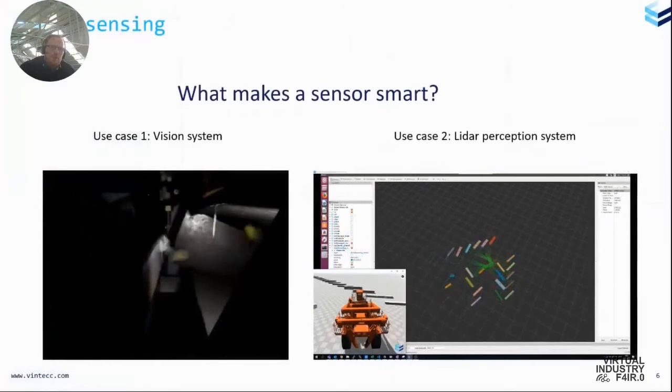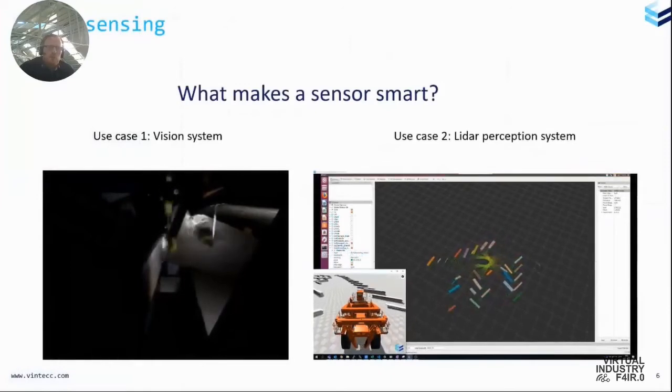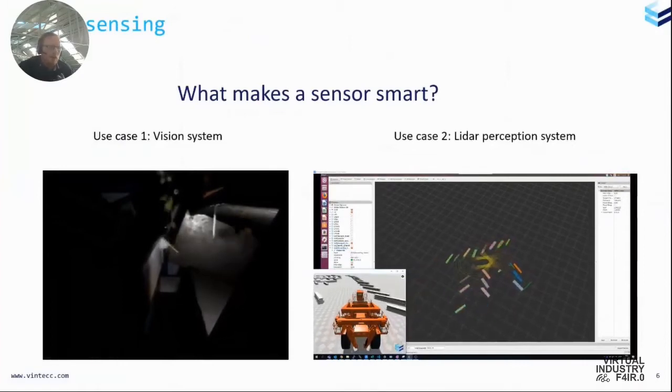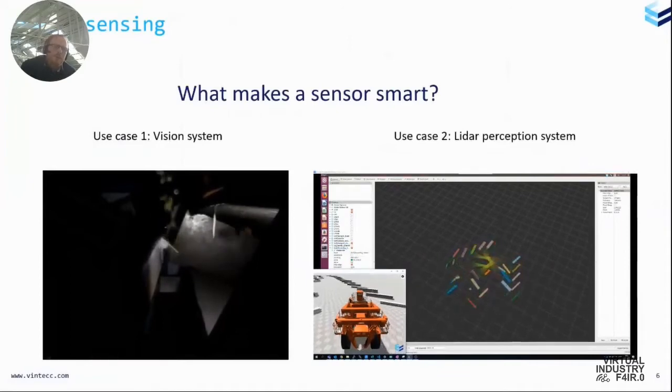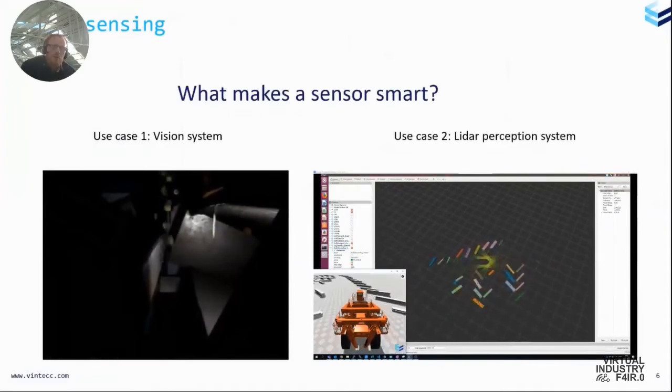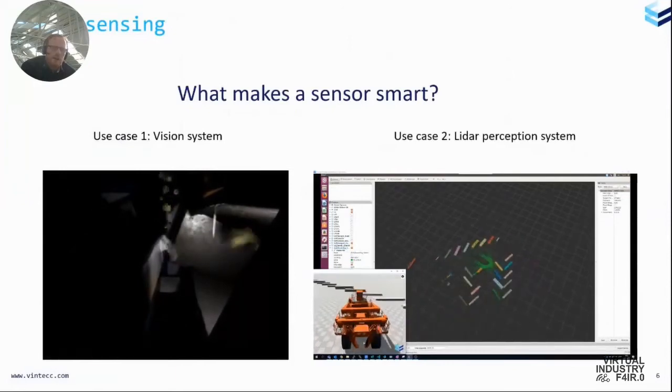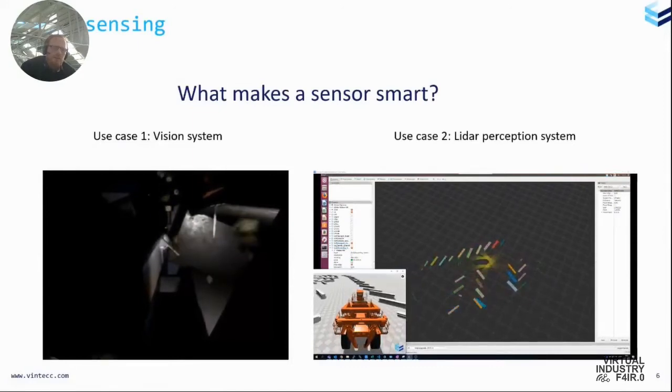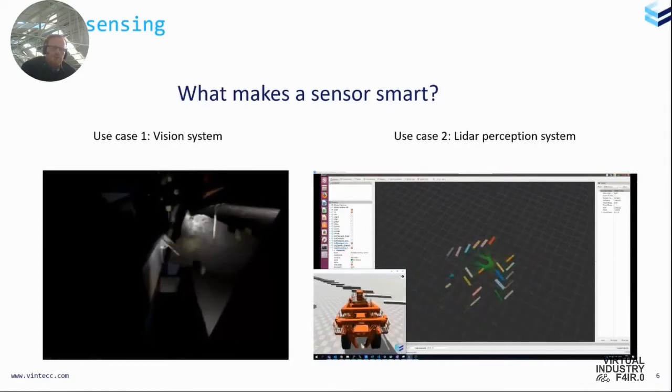Okay, let's start with the session. The main question of the session is what makes a sensor smart. So I will try to give you two practical cases where we have used sensors that are not smart. We have used normal sensors, off-the-shelf sensors, and try to make a layer or an abstraction on it so that you can make them smart. So the first case is a vision system for an optical sorting machine and the second case is a LiDAR perception system.